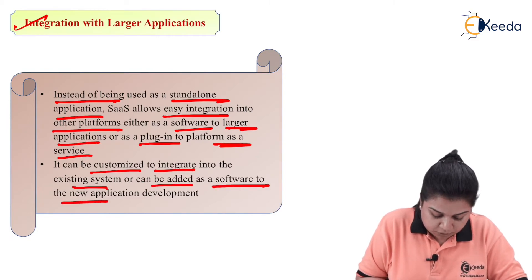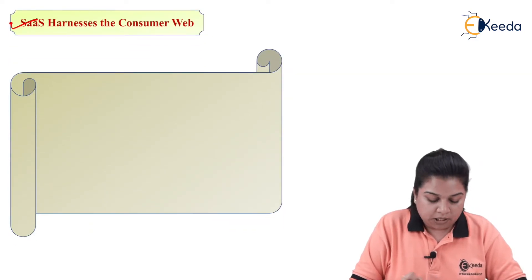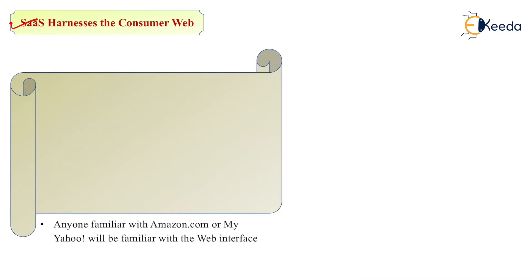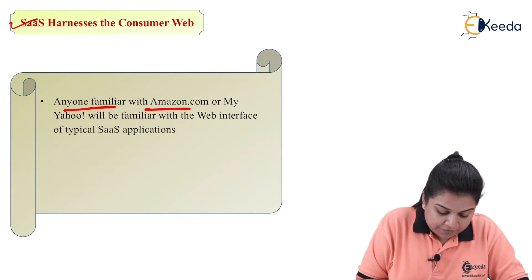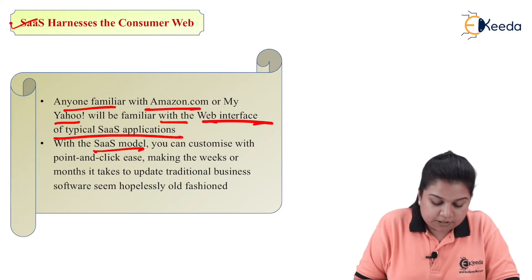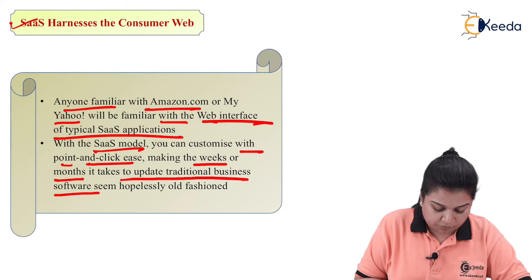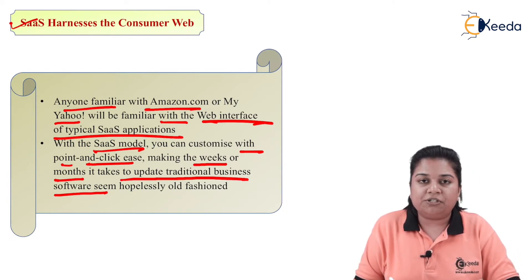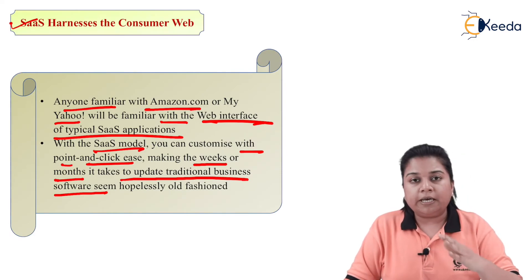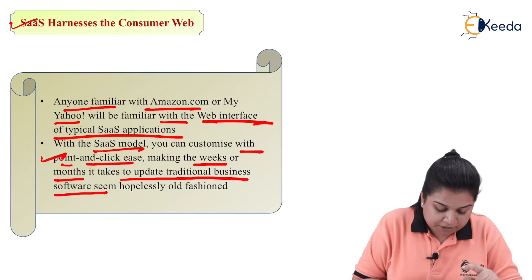SaaS can be customized to integrate into existing systems or added as software to new application development. Software as a Service also harnesses the consumer web — anyone familiar with Amazon.com or My Yahoo will recognize the web interface of a typical SaaS application. With the SaaS model, you can customize with point-and-click ease, making the weeks or months it takes to update traditional business software seem hopelessly old-fashioned.